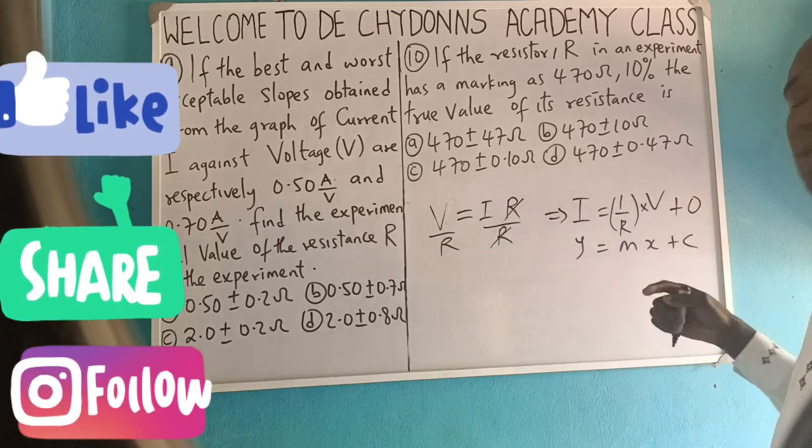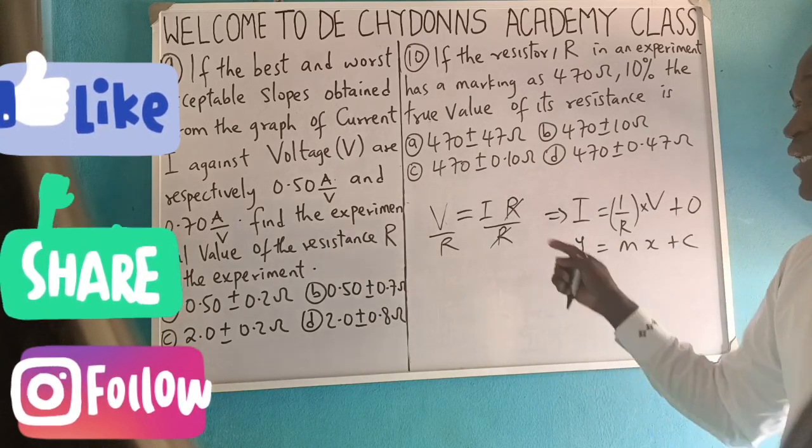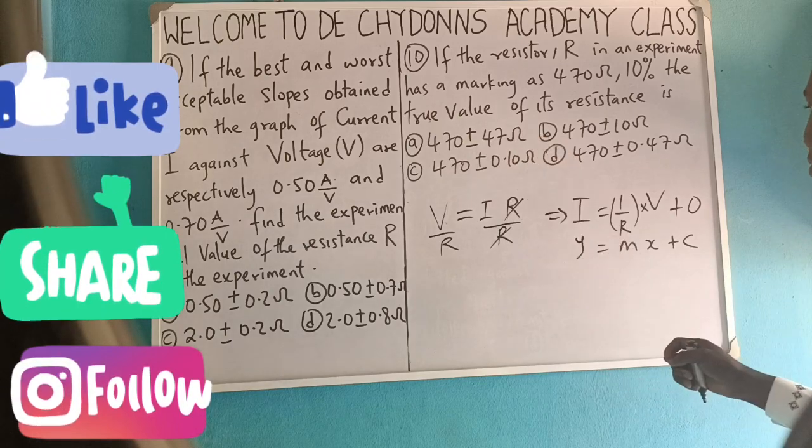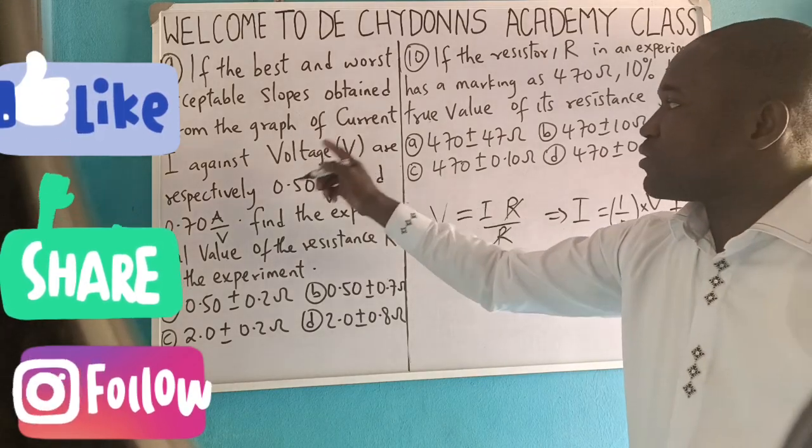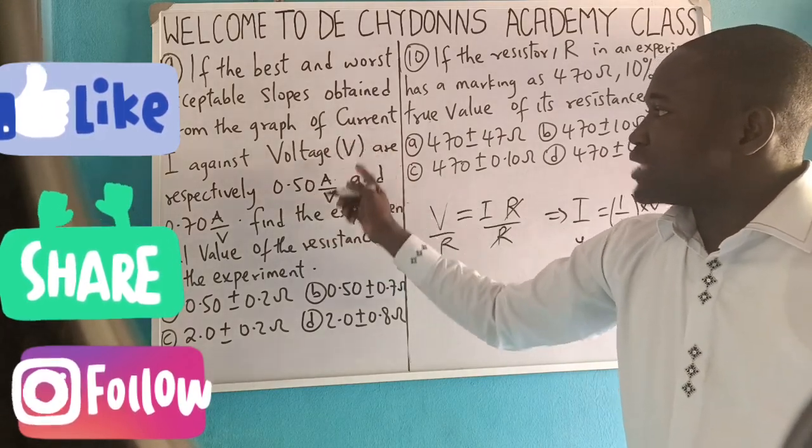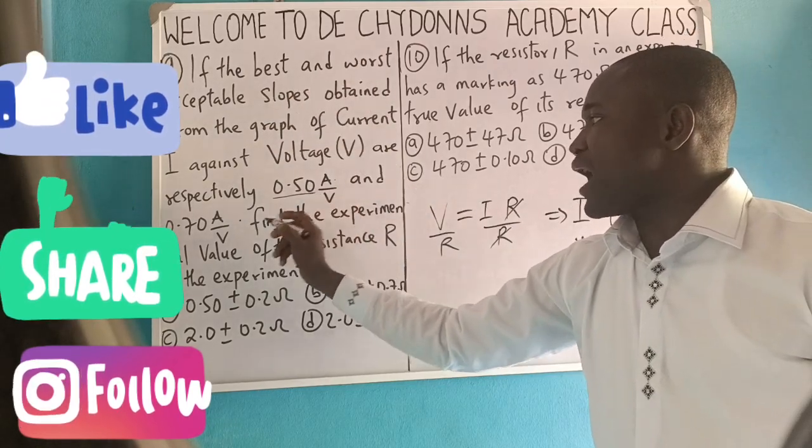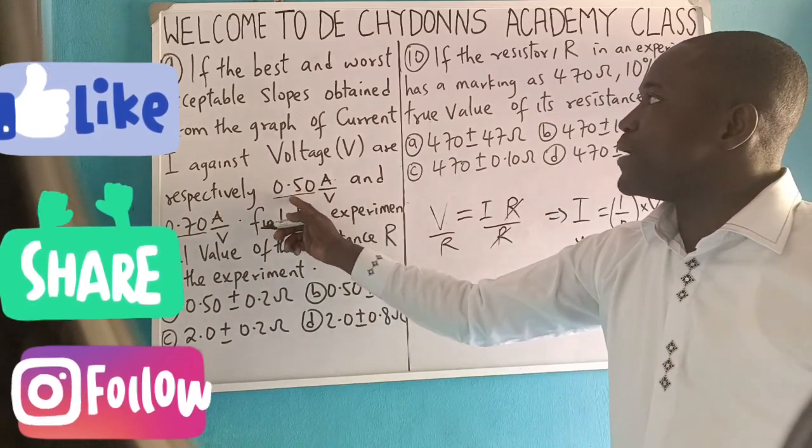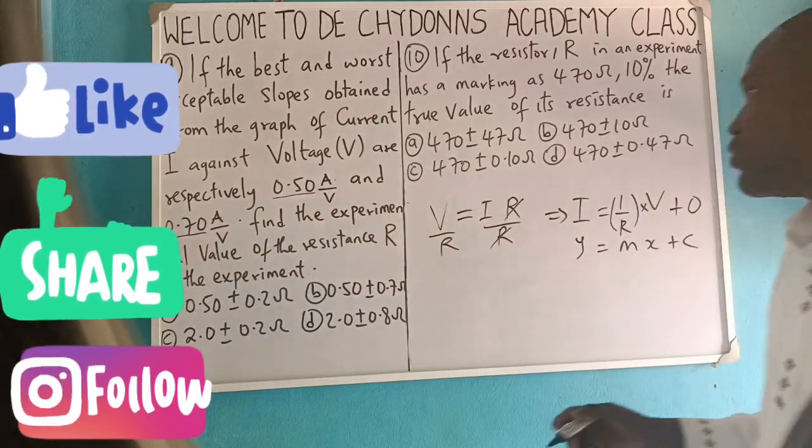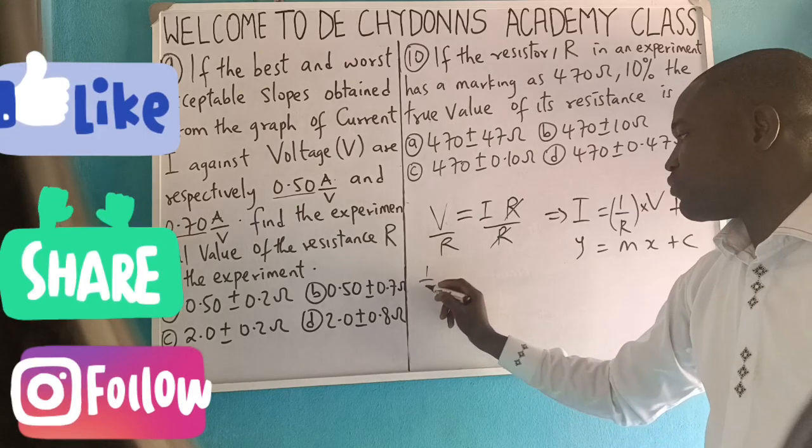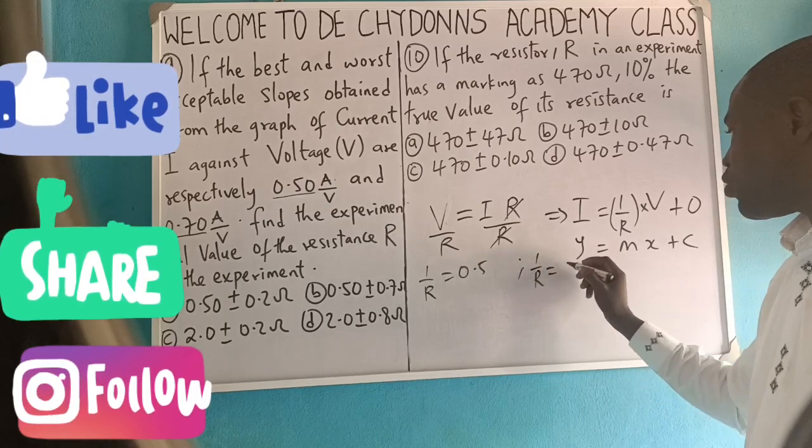But if it didn't pass through the origin, try to get the error encountered while solving for the intercept, as I said in the question before. So the slope will be 1 over R. That means from the graph, the best and worst acceptable slope means that 1 over R equals the best one and 1 over R equals the worst one.